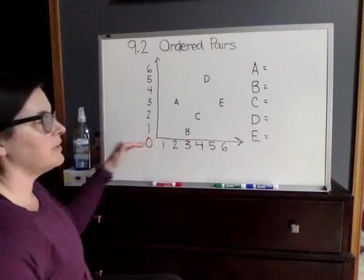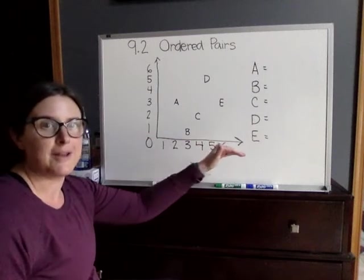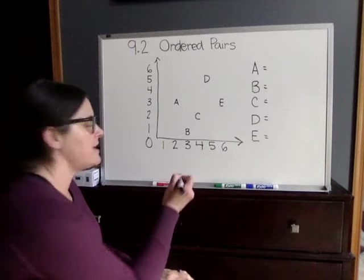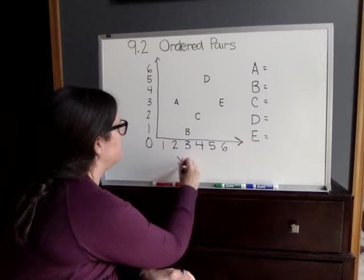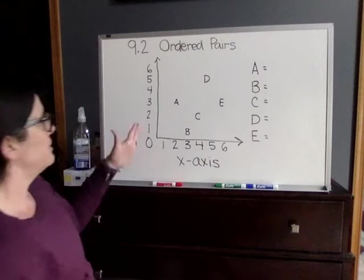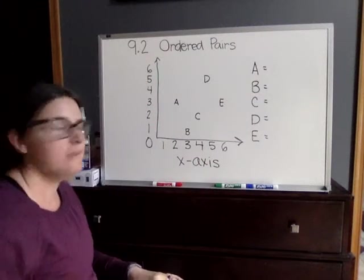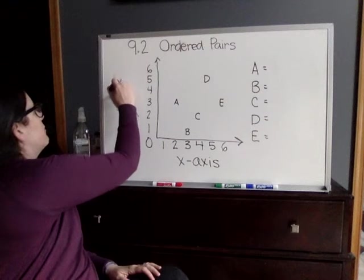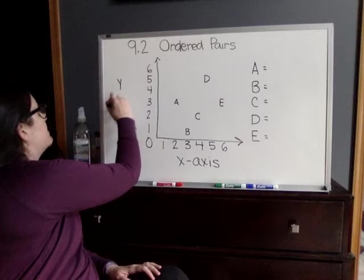So your bottom going across the bottom, your horizontal line, is always the x-axis. Your line, your vertical line going up and down, is always your y-axis.